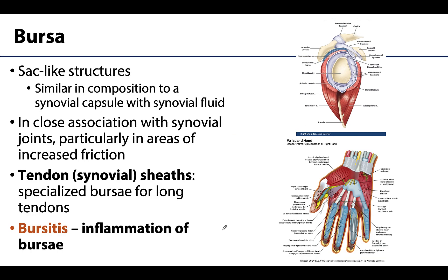Bursae are associated with synovial joints, particularly in areas of increased friction. These are sac-like structures — essentially mini synovial capsules with a small amount of fluid but without the function of articulating bones. They can be located between adjacent muscles, where a tendon passes over a bone, or between bone and skin. There are also specialized elongated bursa-like structures called tendon or synovial sheaths, which are associated with long tendons.